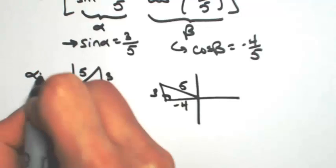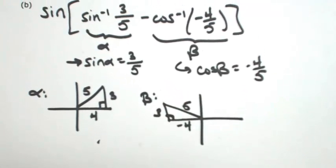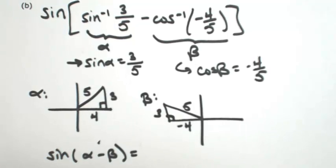So the first triangle is for alpha, the second one is for beta. So rewriting the original problem as sine of alpha minus beta, I can expand this using our difference formula for sine.